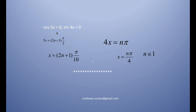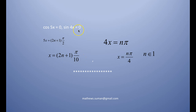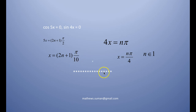For cos 5x = 0, applying the general solution of cos x = 0, we get 5x = (2n + 1)π/2, so x = (2n + 1)π/10. For sin 4x = 0, applying the general solution of sin x = 0, we get 4x = nπ, so x = nπ/4. Therefore, the two general solutions are x = (2n + 1)π/10 or x = nπ/4, where n is an integer.